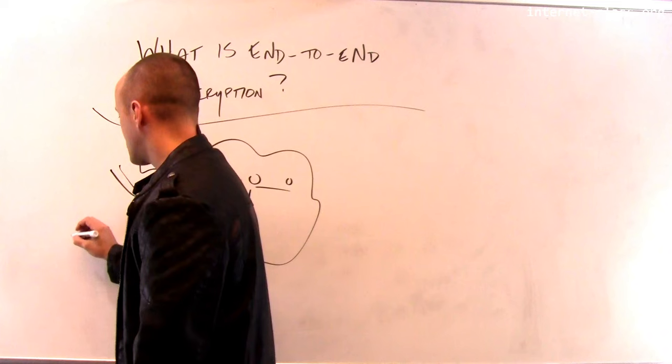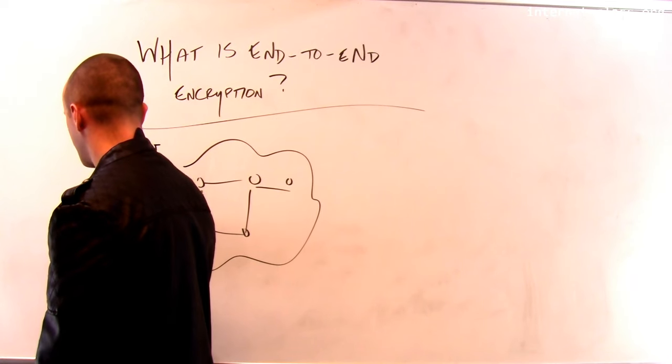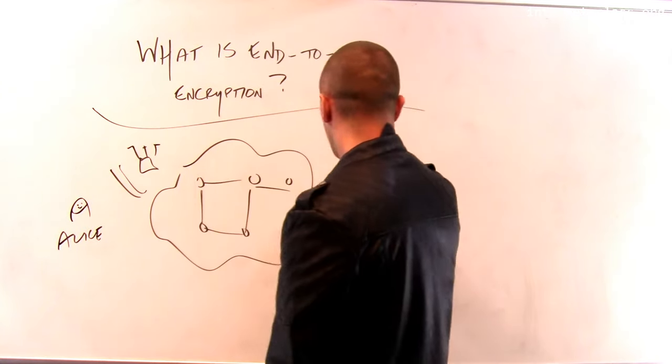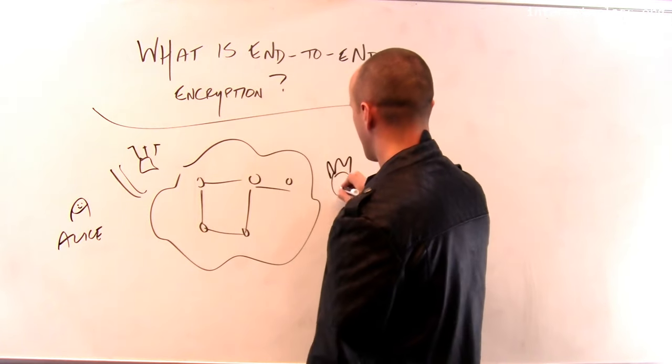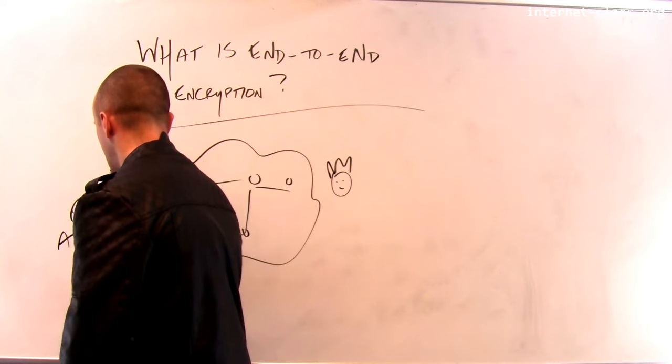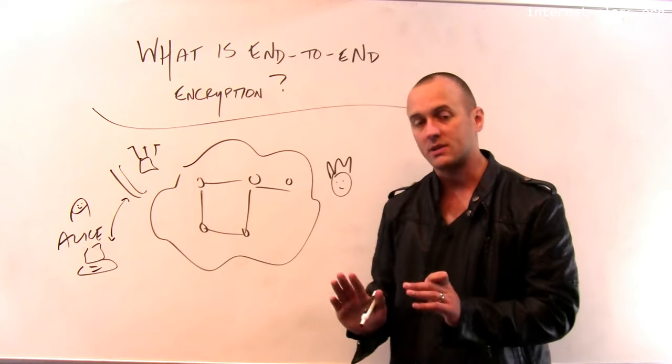The reason is that this ensures that the communications between... So let's say that Alice is engaged in some communication with Bob over our network here. Alice's computer may be connected to this router through some sort of wireless link, and that link itself may be encrypted.